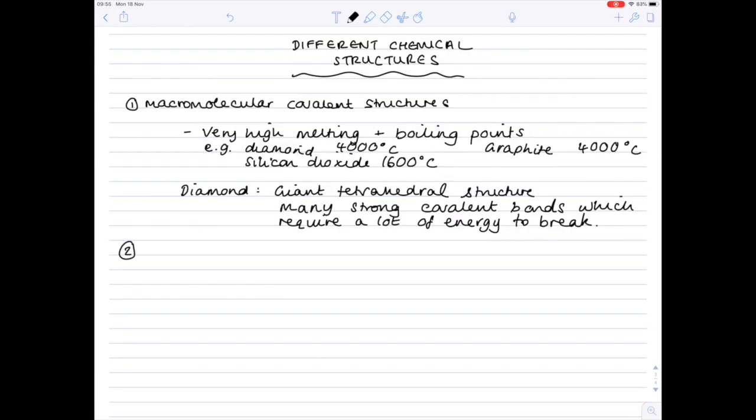Moving on to our second structure which is giant ionic structures. Remember for it to be an ionic structure we need to have a positive ion being attracted to a negative ion.